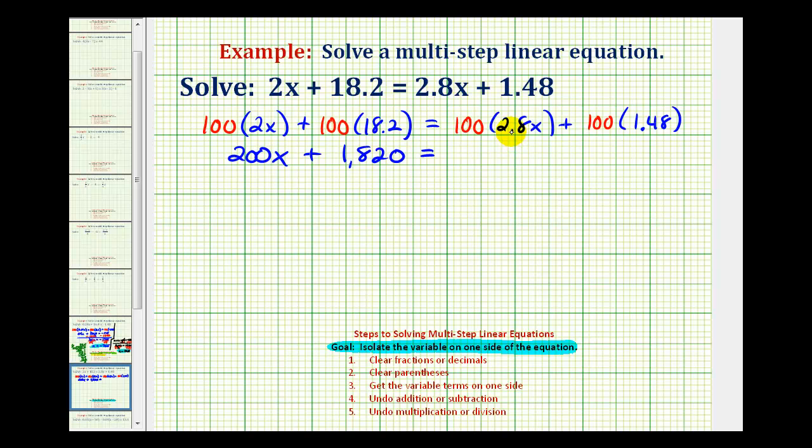Moving the decimal point to the right twice here, we would have 280x. And here we would have 148. So because this one decimal had two decimal places, we had to multiply everything by 100.